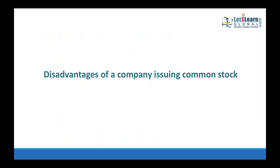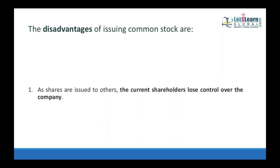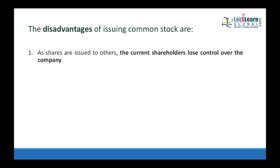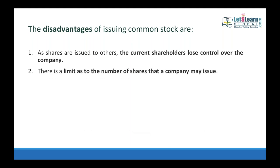Disadvantages of companies issuing common stock: common shareholders have control — unlike bondholders and preference shareholders. The shareholder may say yes or no to management decisions. Also, when forming a company and presenting a business plan to the government, the company is limited by authorized capital — it cannot issue shares beyond the authorized amount registered at formation.